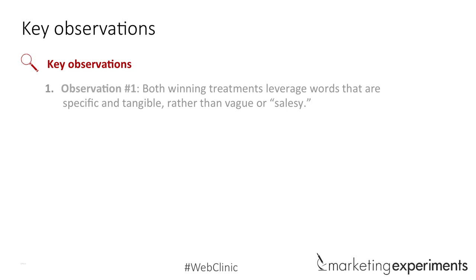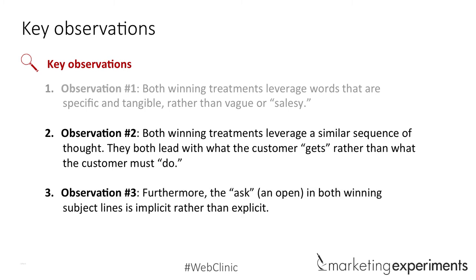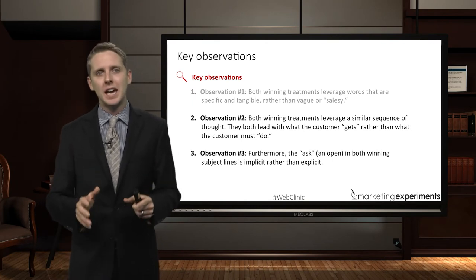Observation two: both of the winning treatments leverage a similar sequence of thoughts. They not only use the right words but put them in a specific order. Observation three was also really fascinating: both subject lines don't make the ask explicit — they make it implicit. There's not a direct ask in the subject line itself. Let's look at what I mean when we talk about sequence — thinking about what the customer gets versus what the customer has to do: get versus do.